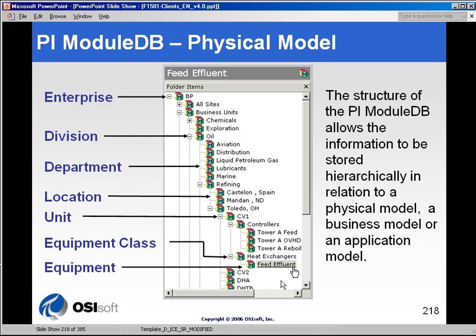There might be a tag on a heat exchanger — for example, a feed effluent module — and those tags may have a naming convention that is only known to people in that specific production area. However, with this module database structure, anybody in the corporation can drill down and see what pieces of equipment are being monitored in PI, eventually drilling down to the specific tag level.